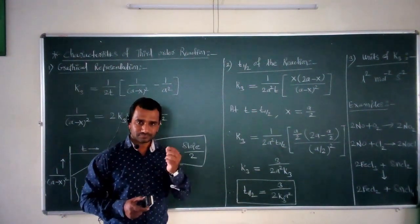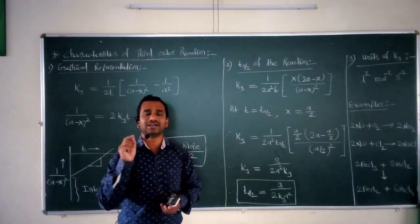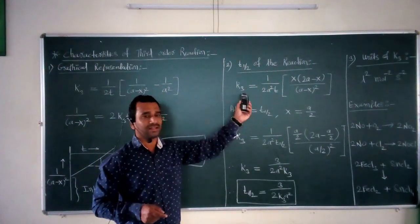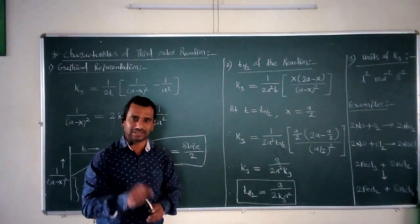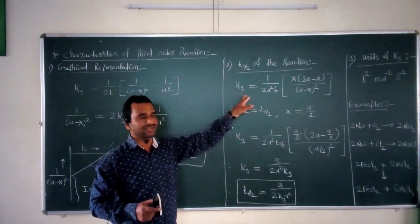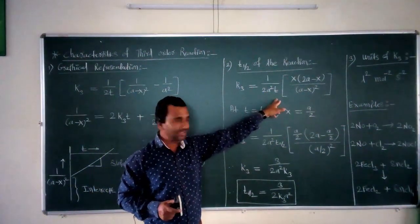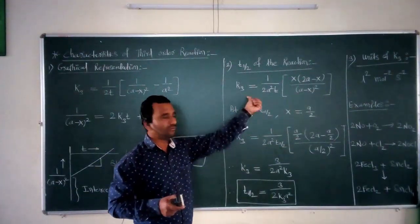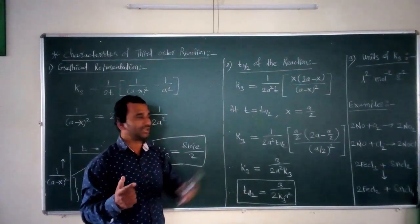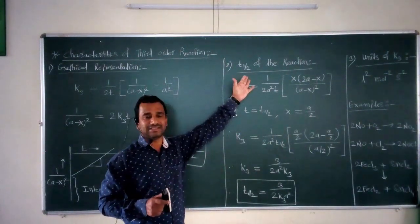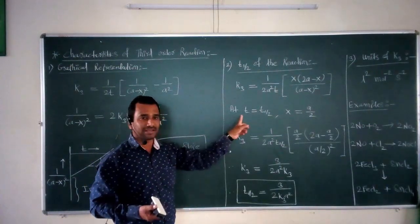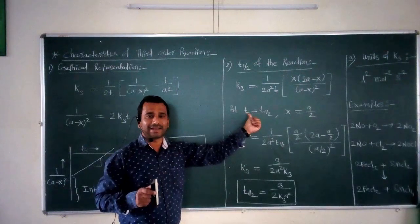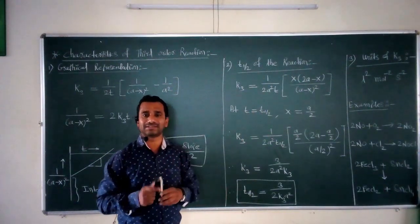To find T-half, we consider the integrated rate equation for third order reaction: K3 = 1/(2a²T) × [x(2a−x)/(a−x)²]. We consider the reaction at its half-life period, meaning time T = T-half. At T = T-half, the initial concentration of the reactant becomes half, so x = a/2.